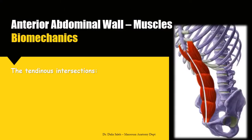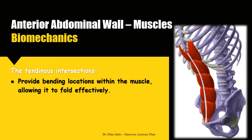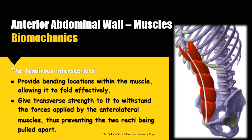The significance of the tendinous intersections of the rectus abdominis muscle: besides demarcating the segmental origin during embryological development, these tendinous intersections provide pivoting points within the muscle, allowing it to fold effectively. Otherwise, there would be excessive shortening of the vertical muscle fibers and bunching of the fibers. They also give transverse strength to the rectus abdominis to withstand forces applied by the anterolateral muscles, preventing the two recti from being pulled apart.